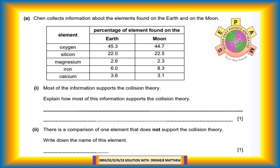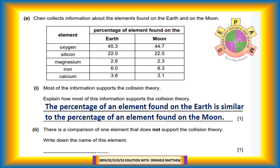Question 11a continued: There is a comparison of one element that does not support the collision theory. Write down the name of this element. The name of the element is iron. The percentage of iron found in the earth is slightly different from the percentage found in the moon. The earth has 6% iron and the moon has 8.3% iron.